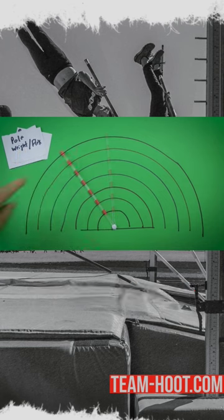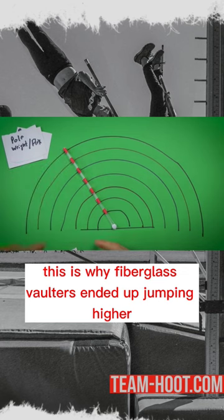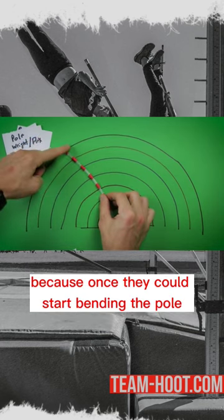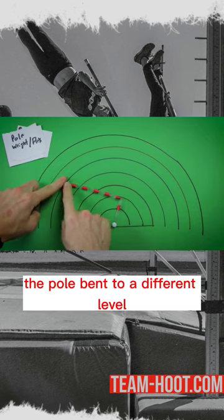The pole flex or the weight? Say you're holding on the top of the pole but it's kind of difficult. This is why fiberglass vaulters ended up jumping higher because once they could start bending the pole, they pulled it down and the pole bent to a different level.